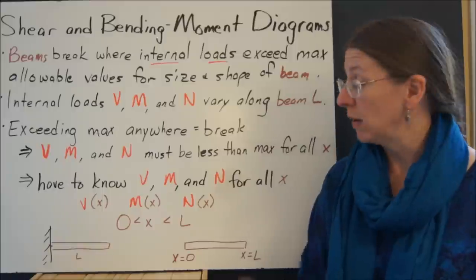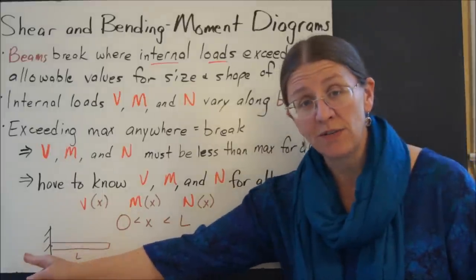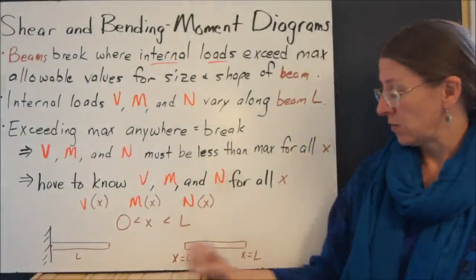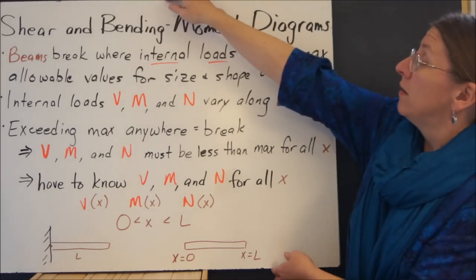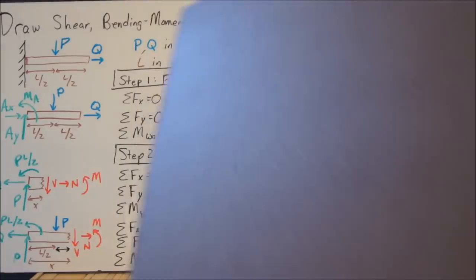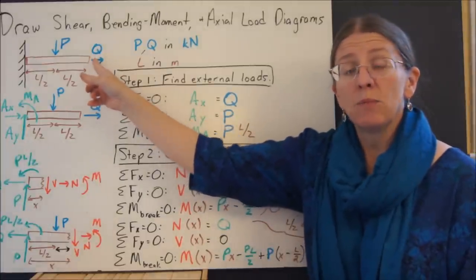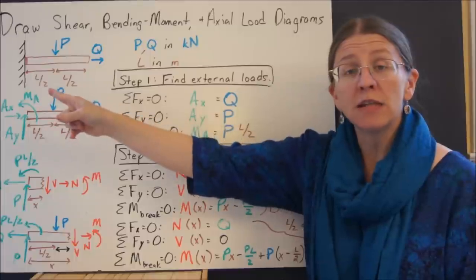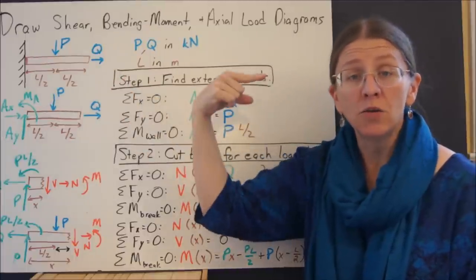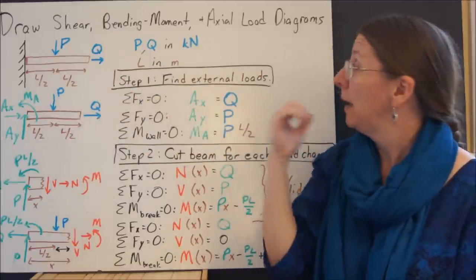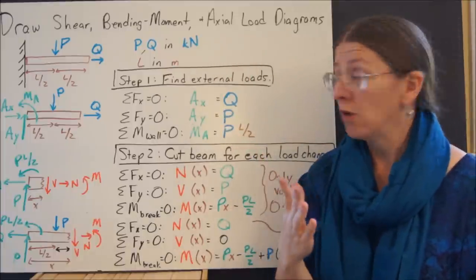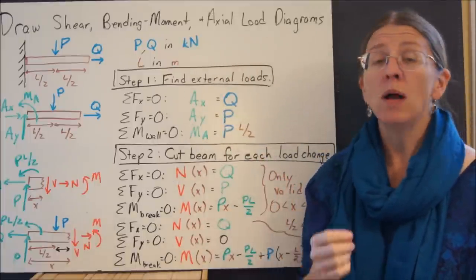As a point of convention, we will start x equals 0 on the left-hand side and go this way as we go along. Let's look at this basic beam with a cantilever on the left-hand side, P in the middle, and Q coming off the end as an axial load. I'm going to take these in metric units.